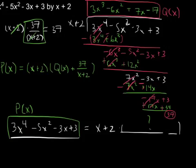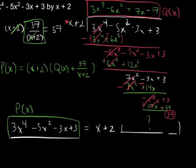So if I multiply x plus 2 by my quotient polynomial and then by 37 over x plus 2, I get exactly my original polynomial. The last thing to think about is: why does this mean that x plus 2 is not a factor? x plus 2 could only be a factor if it goes in evenly — that's what it means to be a factor. And more importantly, x plus 2 not being a factor means that negative 2 is not a root.